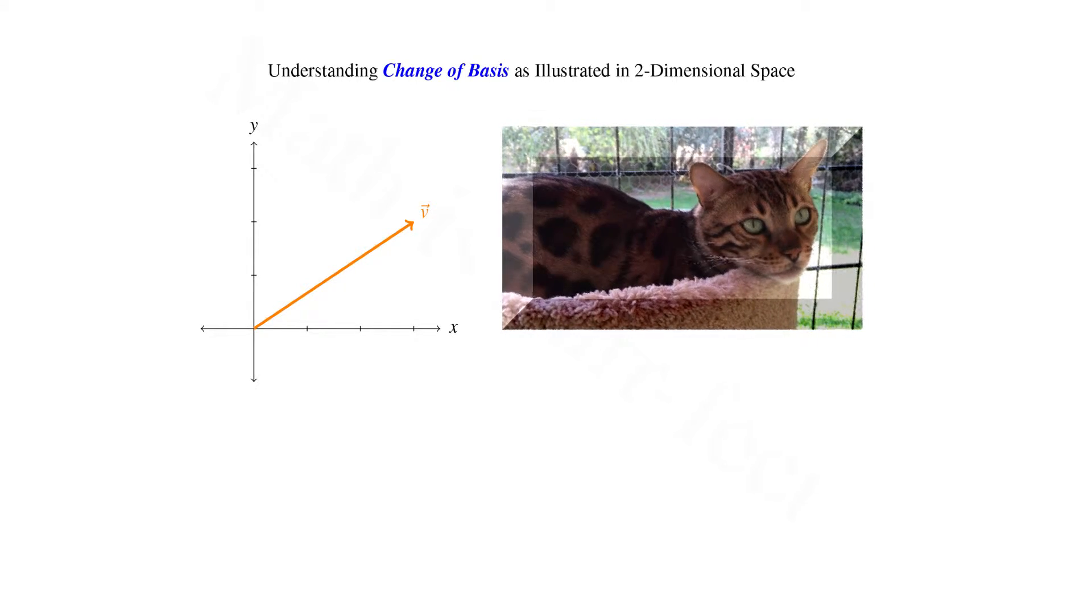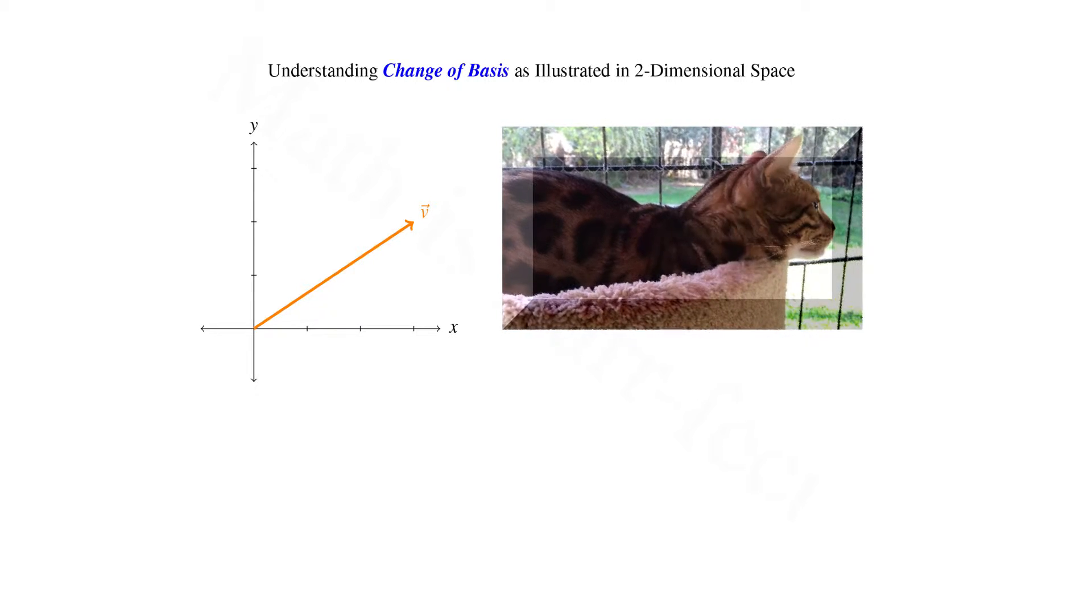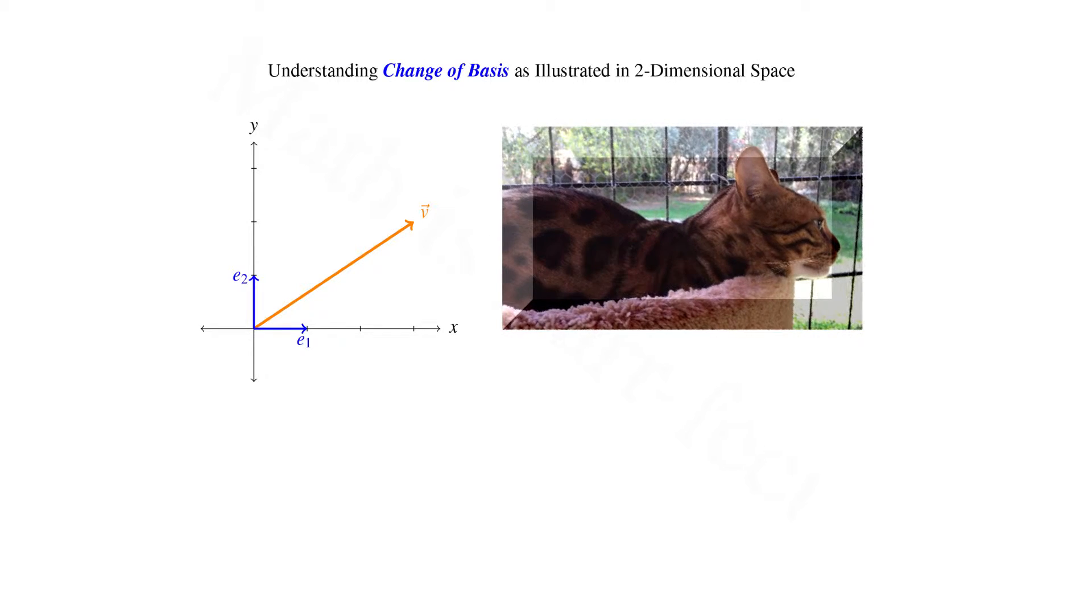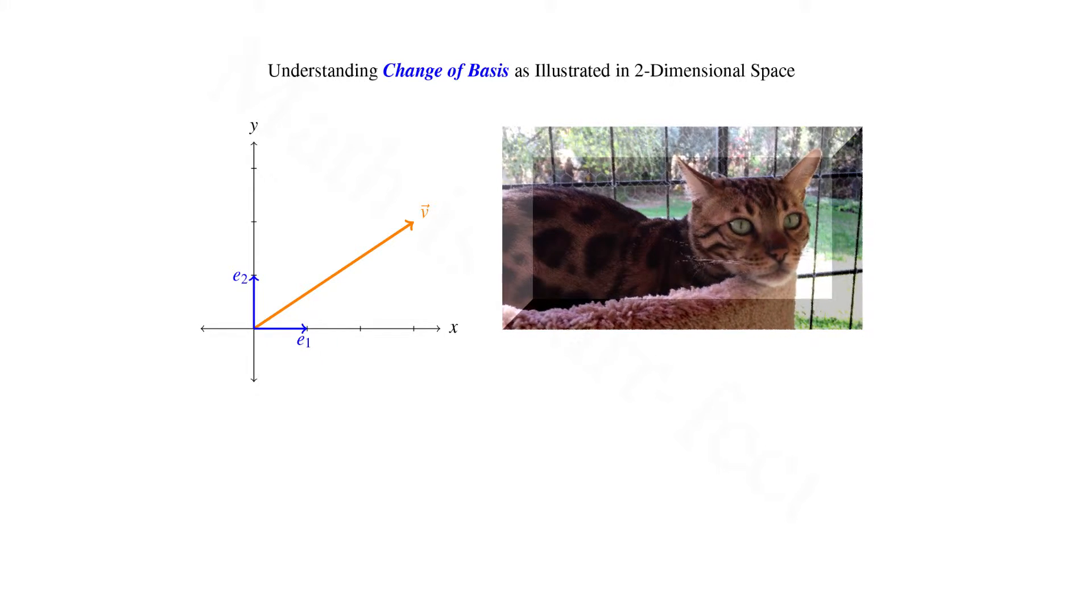Let's consider a vector v positioned at the origin, pictured here in orange. We know that the two unit vectors in the direction of x and y axes are called e1 and e2 respectively.